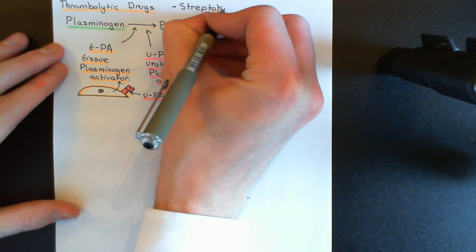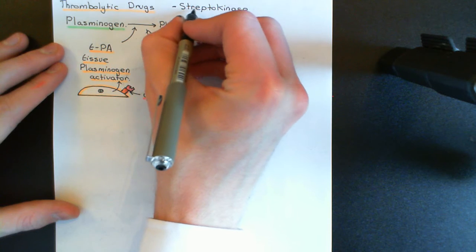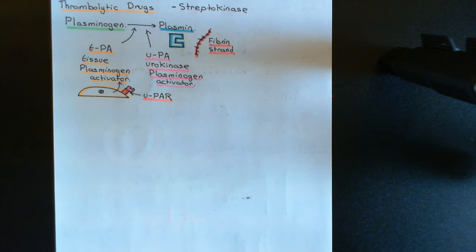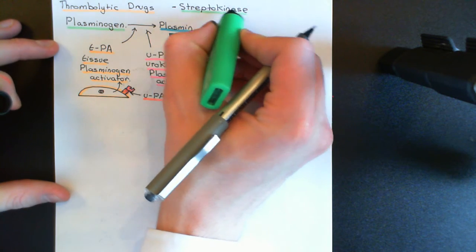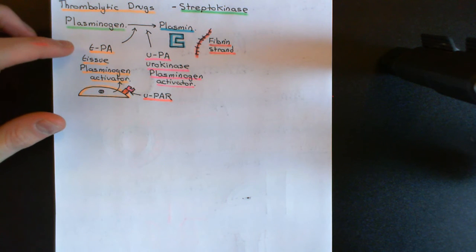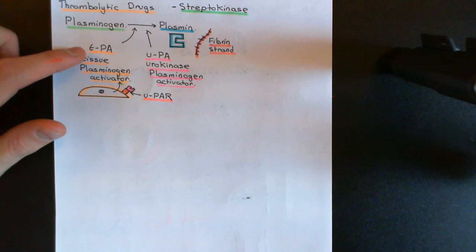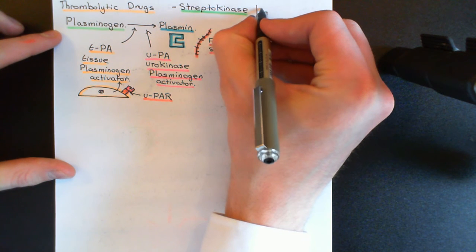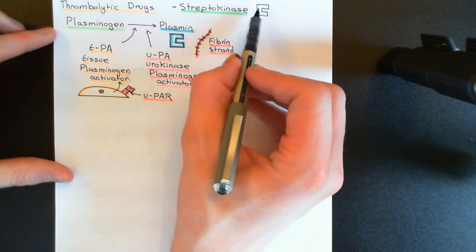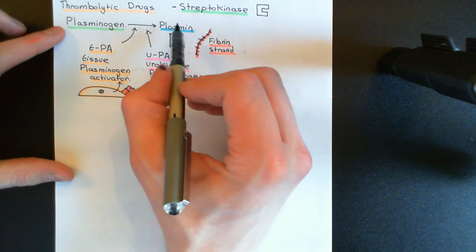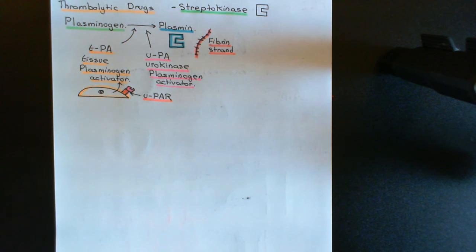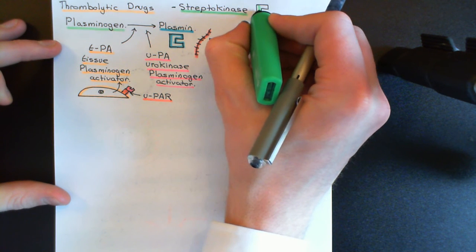One very important example of a thrombolytic drug is streptokinase. Streptokinase is an enzyme produced by certain Streptococcus species such as Streptococcus pyogenes. Just like tissue plasminogen activator, it is an enzyme which can activate human plasminogen to plasmin, and can therefore result in blood clot lysis. This is actually one of the virulence factors of these bacteria — they produce this enzyme to cause lysis of human blood clots.